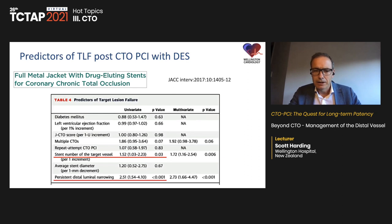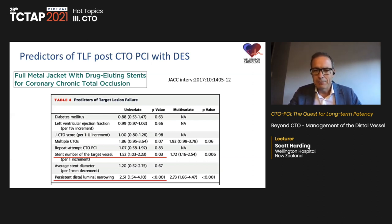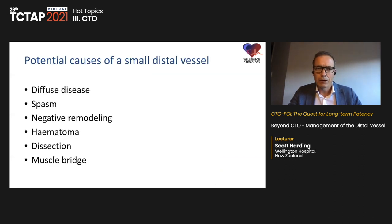Multiple studies show that persistent distal lumen narrowing is associated with target lesion failure and was the strongest predictor of TLF in one study. Increasing stent number or stent length also predicts target lesion failure. So we have a competing problem: we don't want to stent everything because that increases failure, but we may not want to leave important narrowings behind. We need a way to assess this. Potential causes of a small distal vessel include diffuse atherosclerotic disease, spasm, negative remodeling, hematoma, dissection, or muscle bridge.